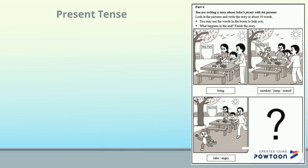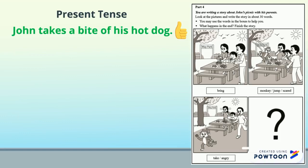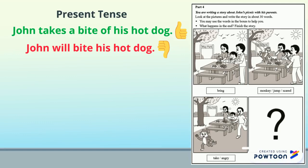Please remember to write in present tense. For example, 'John takes a bite of his hot dog' — that means it's happening now. If I write 'John will bite his hot dog,' that could be tomorrow, so that would be future tense.